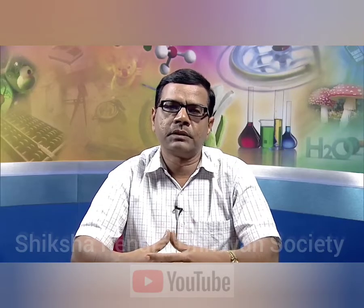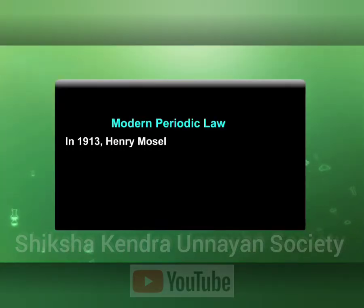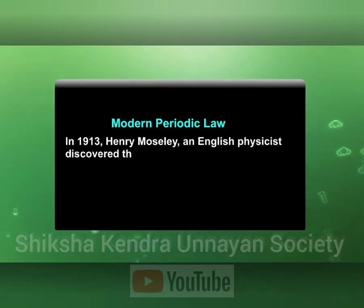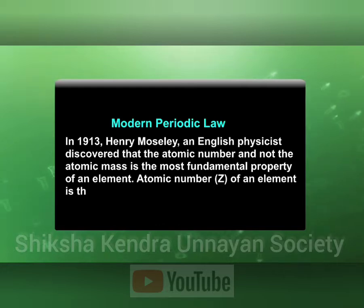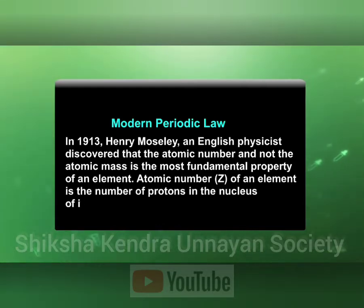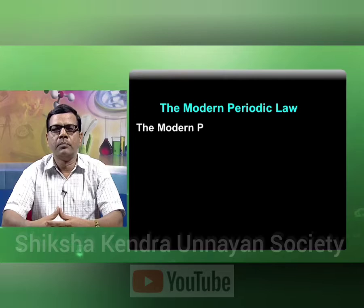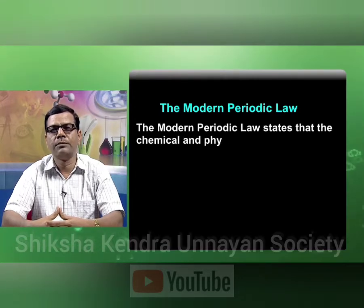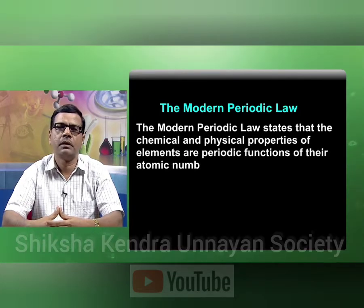After the failure of Mendeleev's periodic table, the modern periodic law was assumed. In 1913, Henry Moseley, an English physicist, discovered that atomic number and not atomic mass is the most fundamental property of an element. Atomic number of an element is the number of protons in the nucleus of its atom. According to modern periodic law, the chemical and physical properties of elements are a periodic function of their atomic number.